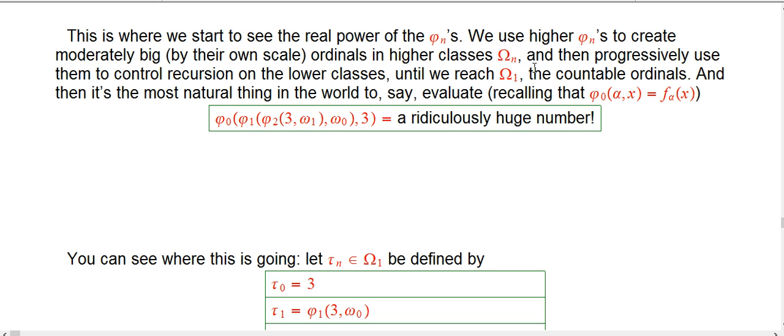The first time we do it, we're not going to be creating a super huge ordinal - maybe ω_n on the scale of ω_n. We're really going to start with just an ε_0 style thing, a tower of exponentials. Then we're going to use those to control recursion on a lower class, and then a lower class, and a lower class till we reach ω_1, the countable ordinals.